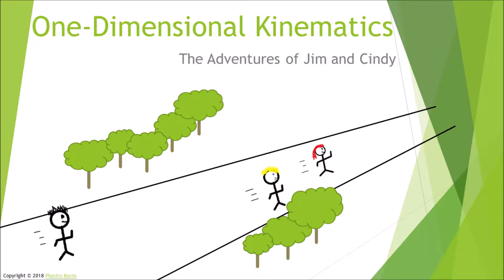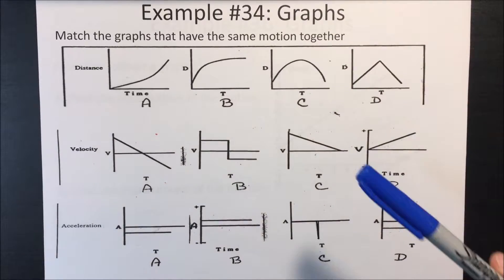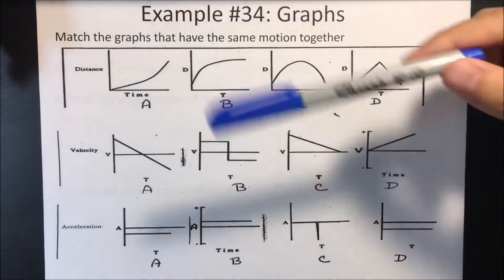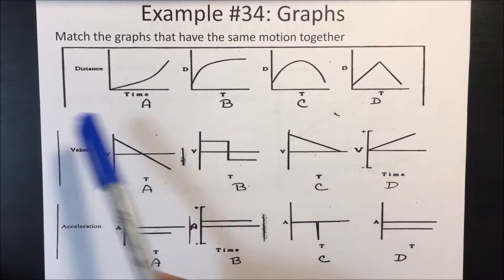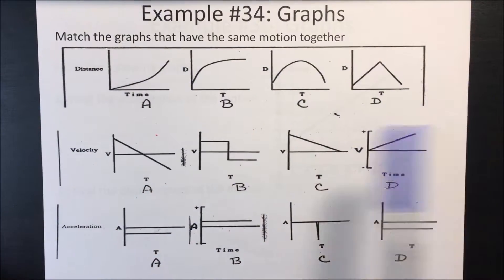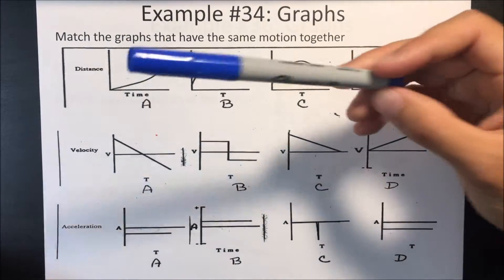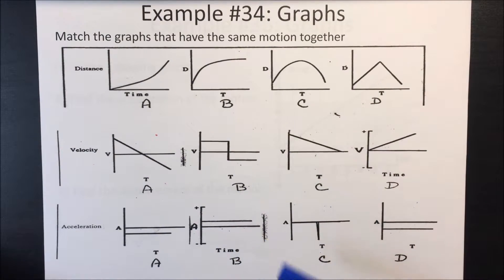Welcome back to One Dimensional Kinematics: The Adventures of Jim and Cindy. This is our last section having to do with graphs and kinematics. We are doing graphs now — usually this is stuff that students have a hard time with, but interpreting graphs is very important in life. We have three sets of graphs: position versus time, velocity versus time, and acceleration versus time. We want to match each position versus time graph with the corresponding velocity versus time and acceleration versus time graphs.